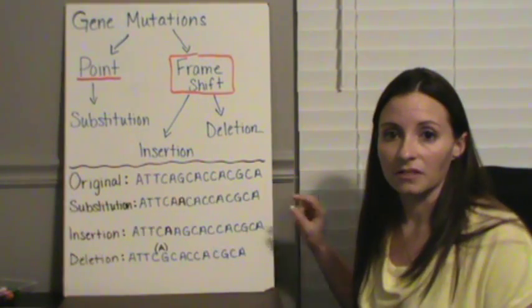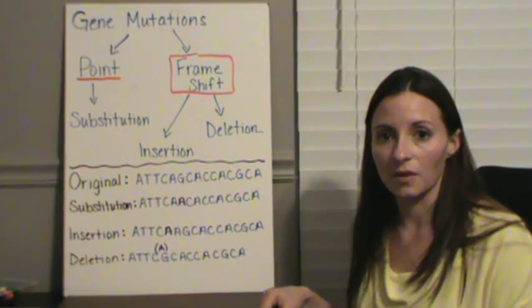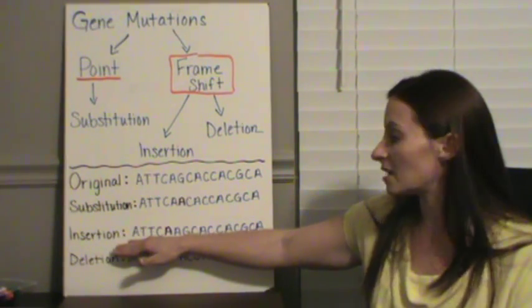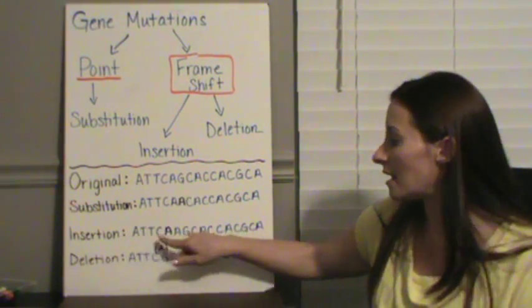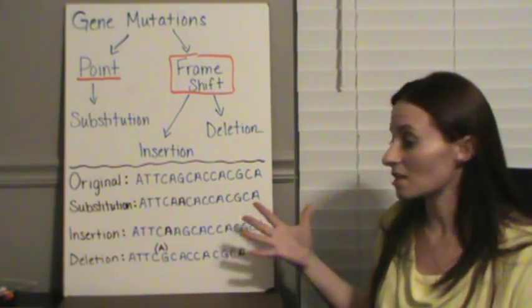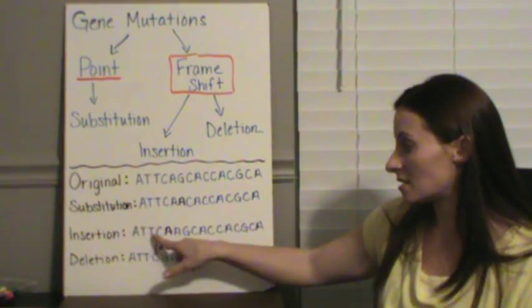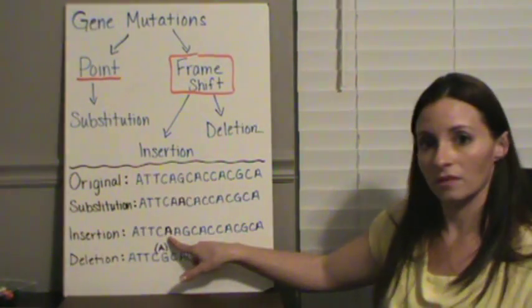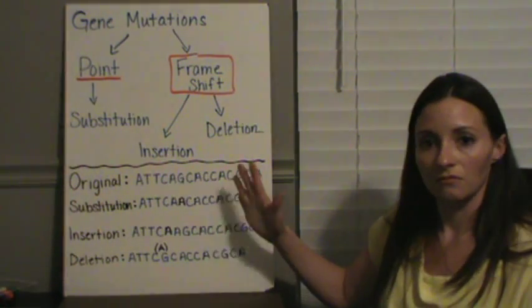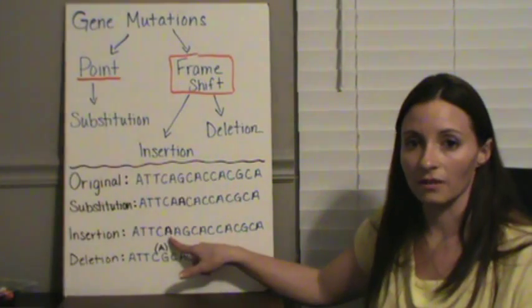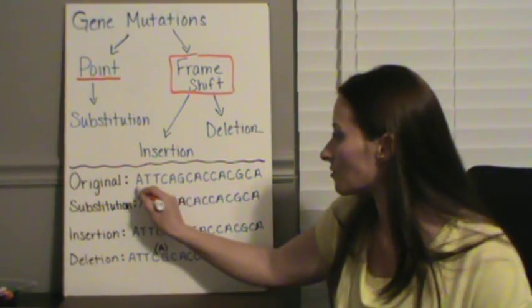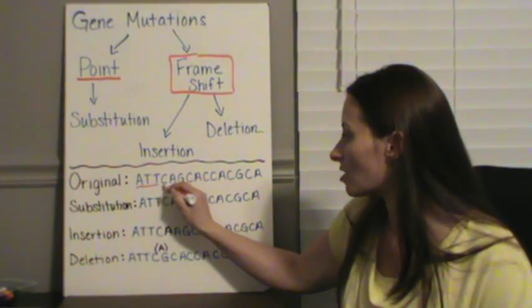Other mutations, however, can have major effects within our body. You'll notice here that we have an insertion. And everything before the point of the mutation, and after the point of the mutation, looks like it's correct. We have ATTC, and if we avoid the mutation, it's AGCAC, everything's good. But we have a mutation in here, and we added an A.